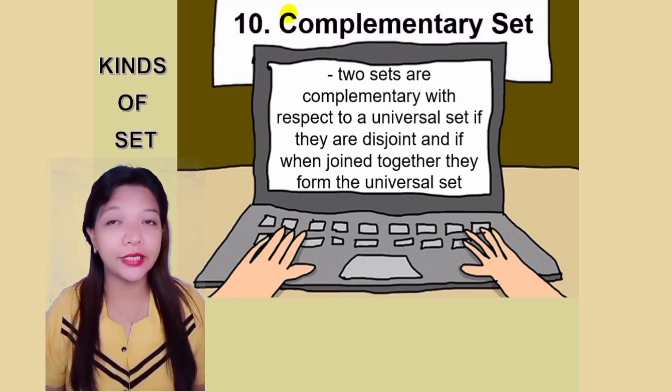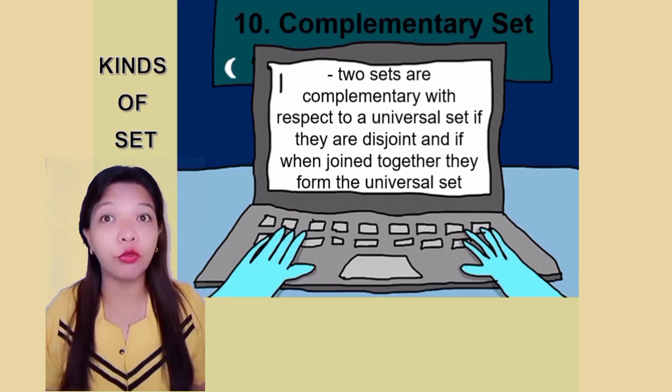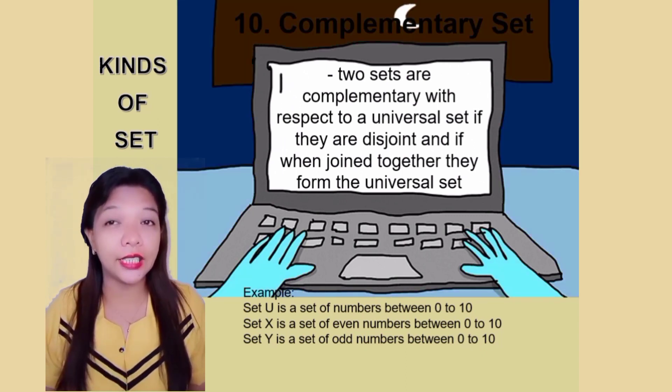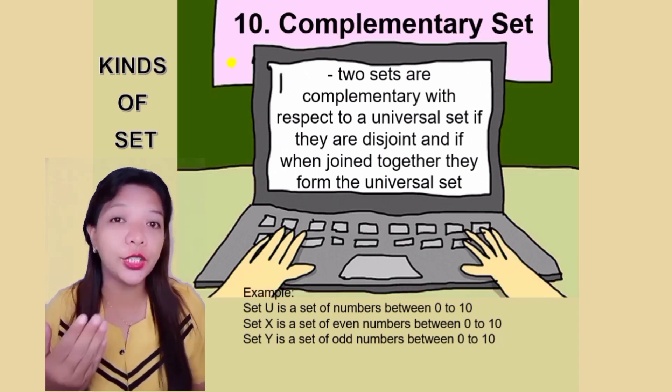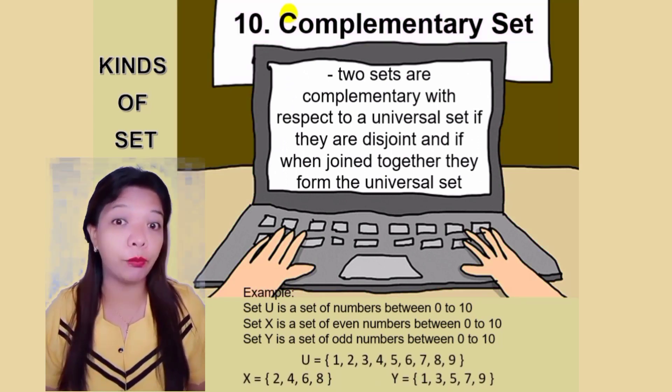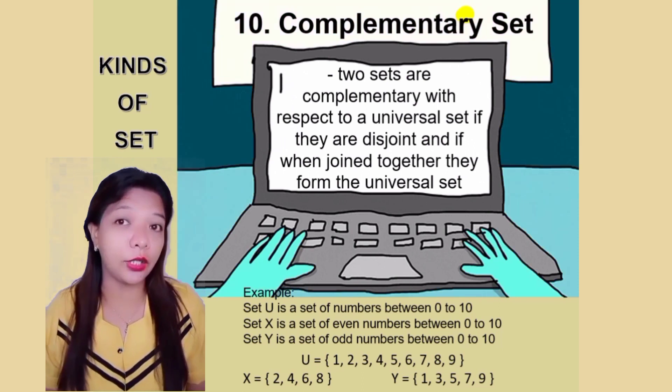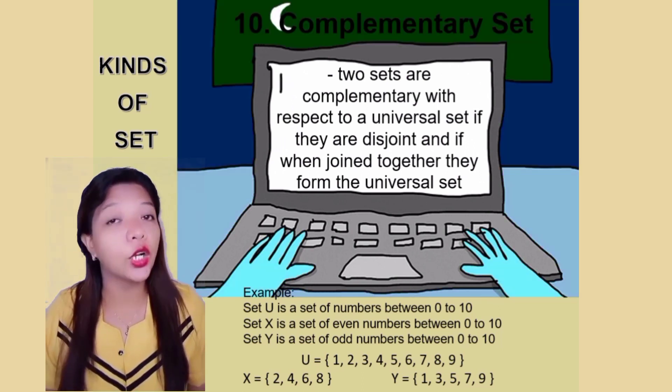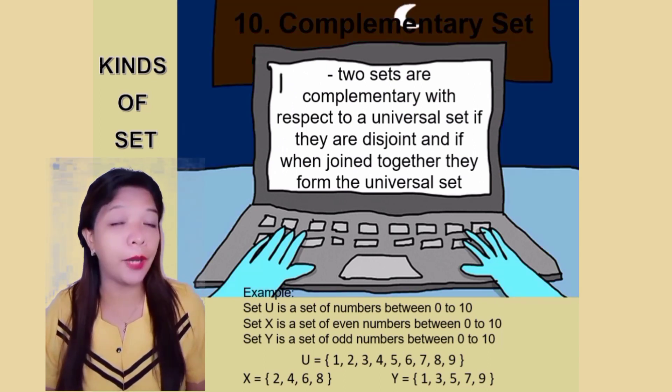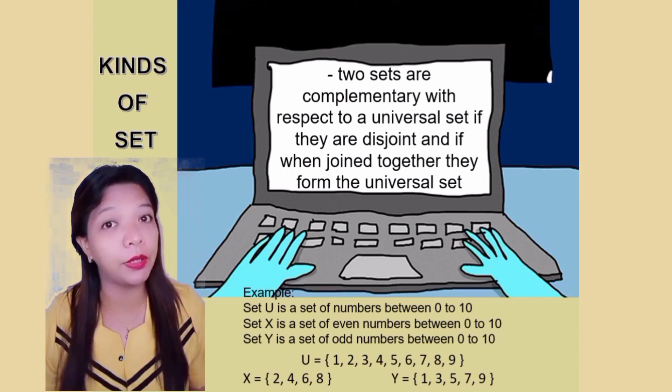Number 10. Complementary set. Two sets are complementary with respect to a universal set if they are disjoined and if one joined together, they form the universal set. For example, set U is a set of numbers between 0 to 10. Set X is a set of even numbers between 0 to 10. Set Y is a set of odd numbers between 0 to 10. Set U is equal to open brace 1, 2, 3, 4, 5, 6, 7, 8, 9, close brace. Set X is equal to 2, 4, 6, 8, close brace. Set Y is equal to 1, 3, 5, 7, 9, close brace. If we will combine set X and set Y, we can create the universal set, set U. That is the complementary set.